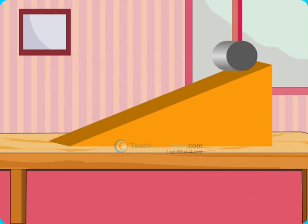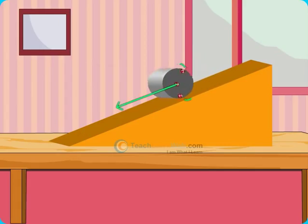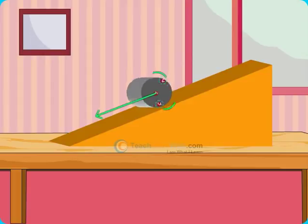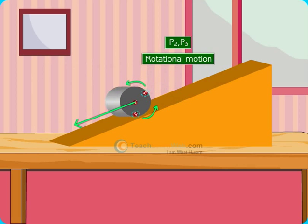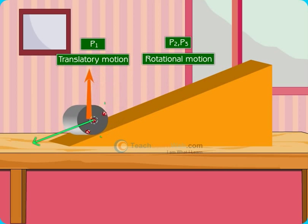Now, consider motion of a cylinder along an inclined plane. Its particles have different velocities. Particles at the circumference may have rotational motion and particles at the center may have translatory motion.